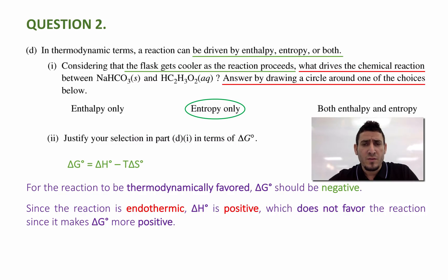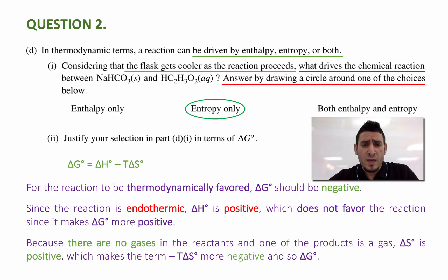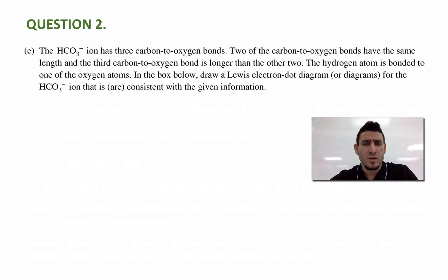So now, why entropy favors the reaction? Because there are no gases in the reactant side, and there is one gas that gets produced in the product side, which is the CO2 gas, delta S zero is positive, which makes the term minus T delta S zero more negative, and so the delta G zero. Let's move on to the next question now.